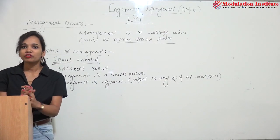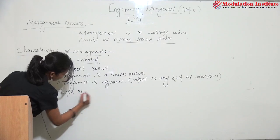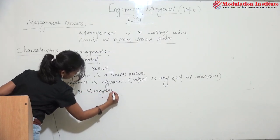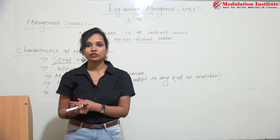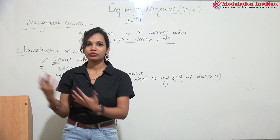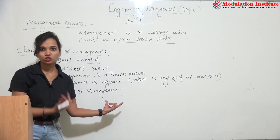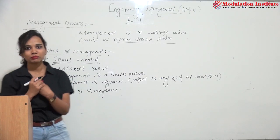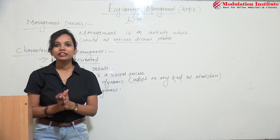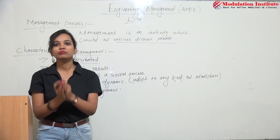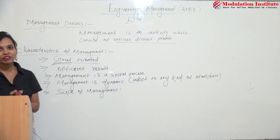Fifth characteristic: management provides a lot of scope in today's world. You can call your friend and hear, 'I am a manager of an IT company.' Management is giving a lot of scope and a lot of jobs to many people. It shows its effectiveness in various fields, especially in the field of business where it is of great importance. That is all about the characteristics of management.